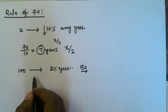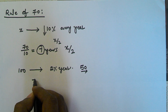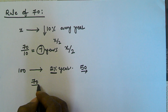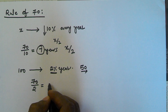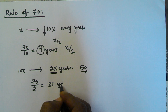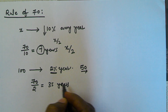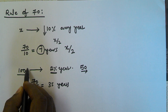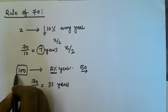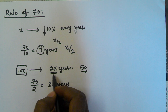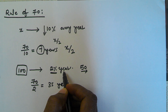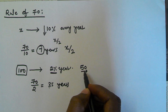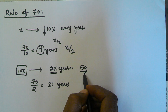To find the number of years, we will divide 70 by the percentage reduced every year — 70 divided by 2 equals 35. So that means if the current efficiency of a machine is 100 and its efficiency is reduced by 2% every year, after 35 years the efficiency of that machine will become 50.